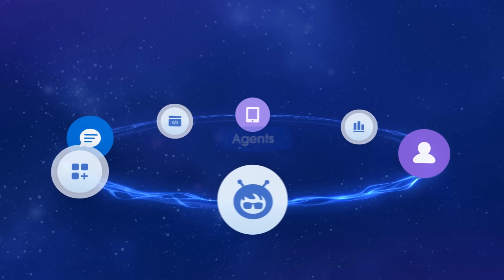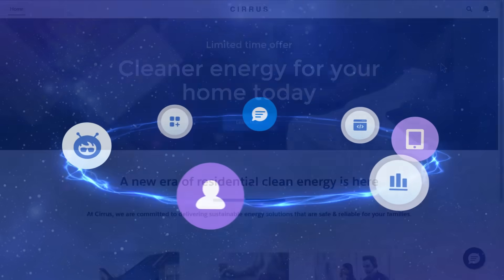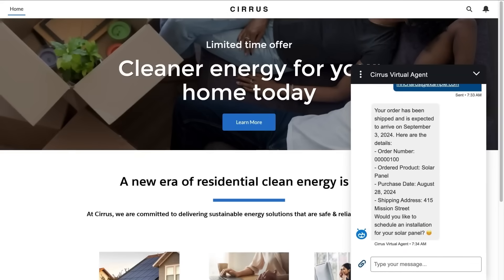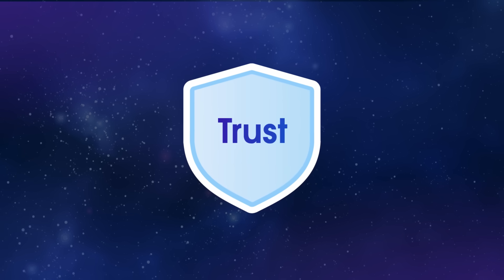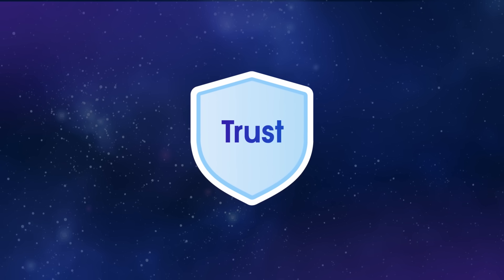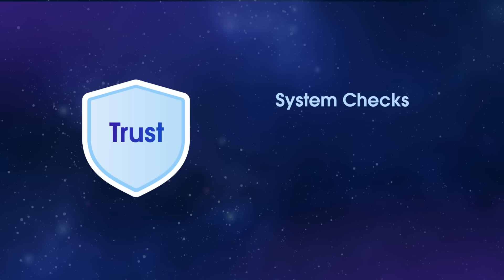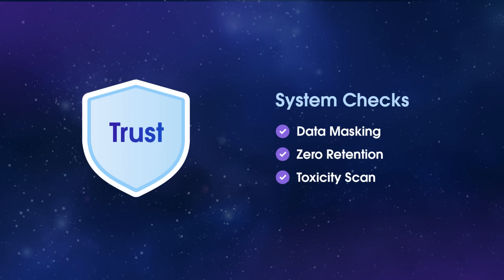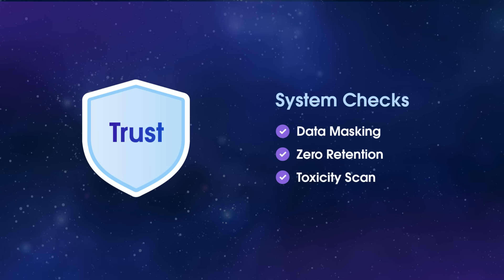A composable platform also provides the command center for your agents to communicate, connecting them through channels from your website chat to Slack and common messaging apps. And the most critical component for a successful launch: trust. It's built into the very foundation with the trust layer. Think of it as your mission control, running pre-flight checks 24-7, handling data masking, zero retention, and toxicity detection, so you can launch with confidence and accelerate your time to value.